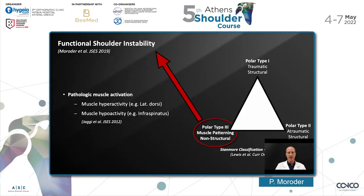I like to call this type of shoulder instability functional shoulder instability, as opposed to structural shoulder instability. In these particular cases, the instability is not caused by structural defects, but rather by pathological muscle activation patterns. In posterior shoulder instability, it's hyperactivity of the latissimus dorsi and hypoactivity of the infraspinatus.